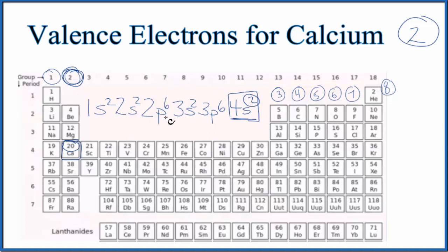So according to the electron configuration, just like the group number for calcium, we have two valence electrons. This is Dr. B with the number of valence electrons for the calcium atom. Thanks for watching.